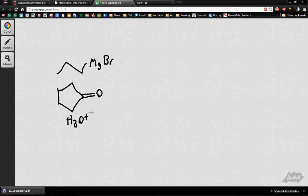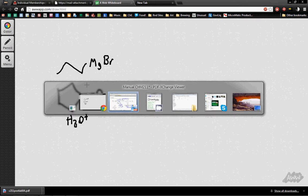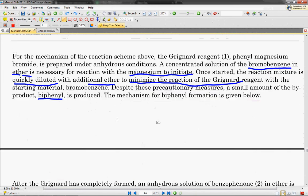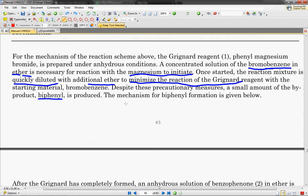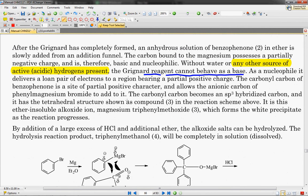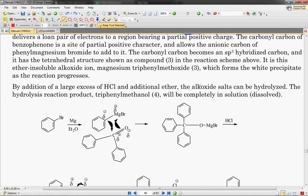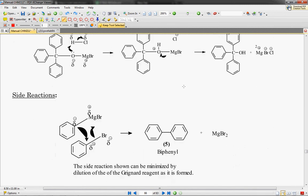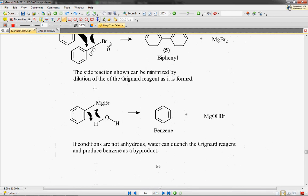and you've got water as well. So if we go into our lab manual, and we scroll down, this is on page 65, so this would be page 66 right here. It says, without any water or any other source of active acidic hydrogens, the Grignard reaction cannot behave as a base. But we do have acidic hydrogens. So what we're essentially going to have is, we're going to have this reaction occurring right here.